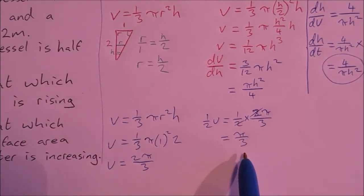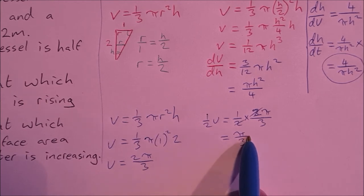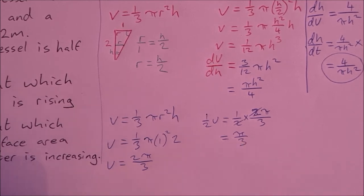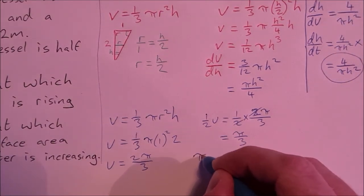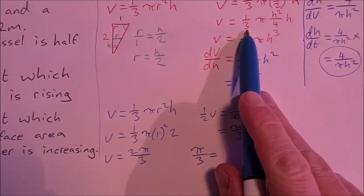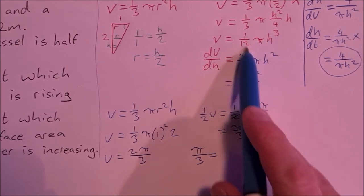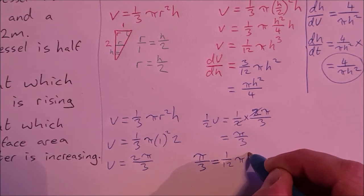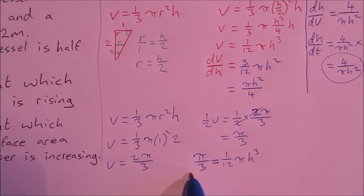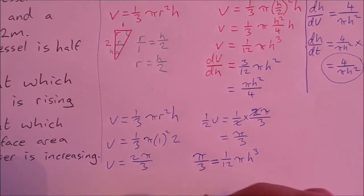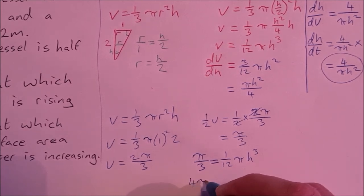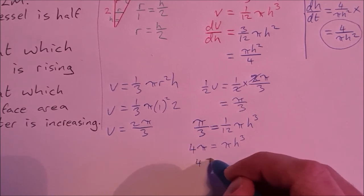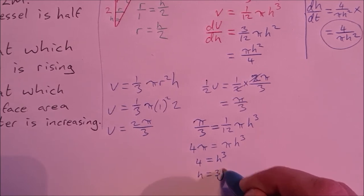So the volume when half full is π/3. Using the formula v = (1/12)πh³ in terms of h: π/3 = (1/12)πh³. Multiplying across by 12: 4π = πh³. Dividing across by π: h³ = 4, so h = ∛4.